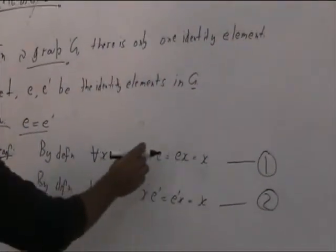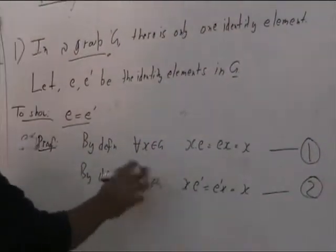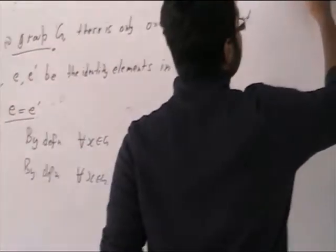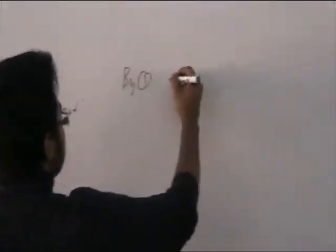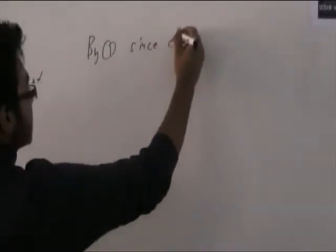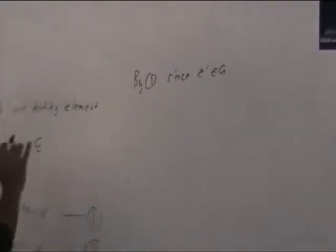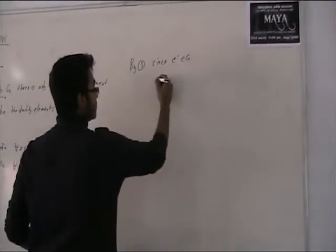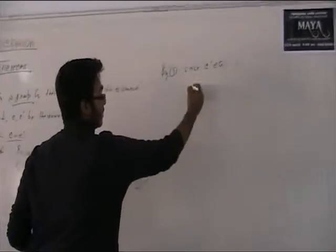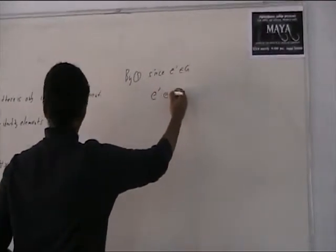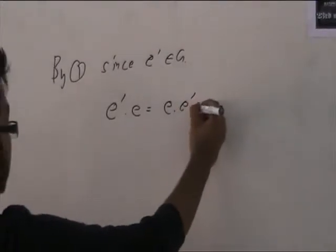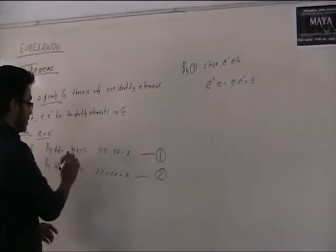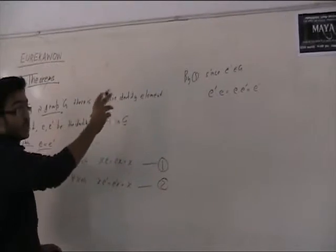By definition of identity, for all x belonging to G: x into e equals e into x equals x. I will call this equation (1). Now by (1), since e' belongs to G, I substitute e' for x, giving: e' into e equals e into e' equals e'. And since e belongs to G, I substitute e into equation (2), giving: e into e' equals e' into e equals e.